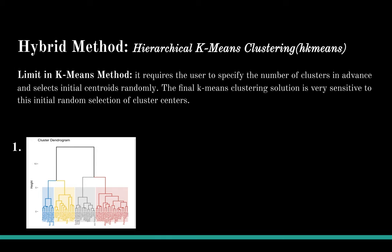However, K-means clustering has limitations. It requires the user to specify the number of clusters in advance and select initial centroids randomly. The final K-means solution is very sensitive to this initial random selection of cluster centers. Even though we use the elbow method to choose the number of Ks, we still don't have a clear standard for choosing. Thus, we want to introduce a hybrid method that combines K-means and hierarchical clustering — hierarchical K-means clustering, or H-K-means for short.